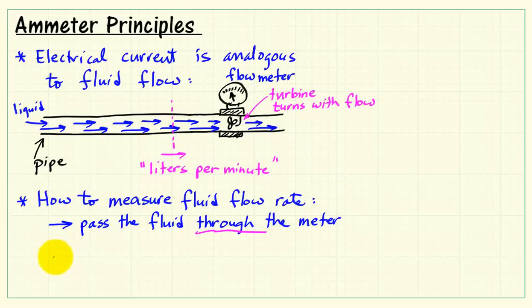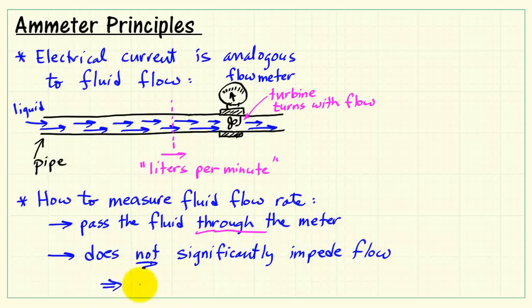But again, we see that we have to have the current flowing through the meter. The meter must not significantly impede the flow, because that would disrupt the measurement. So we would conclude that the meter has very low resistance to flow.